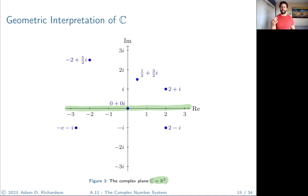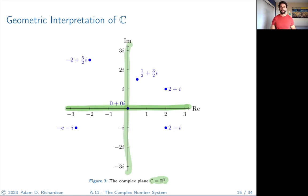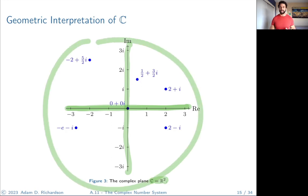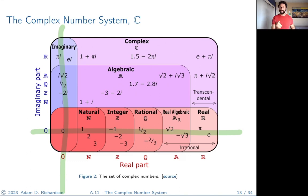We can visually see the containment: real numbers lie on the horizontal real axis, and purely imaginary numbers lie on the vertical imaginary axis, orthogonal to every real number. This diagram of set containments also reflects this: the purely imaginary numbers are shown at a right angle to the real numbers, which is a nice visual consistency.